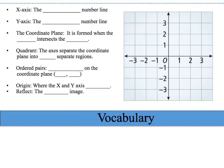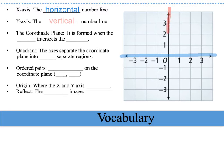In our previous lesson we talked about these vocabulary words, so we're going to go through them again just to refresh your memory. Our first vocabulary word is the x-axis, which is the horizontal number line — the one highlighted in blue that goes from left to right. The y-axis is the vertical number line, highlighted up and down in red.